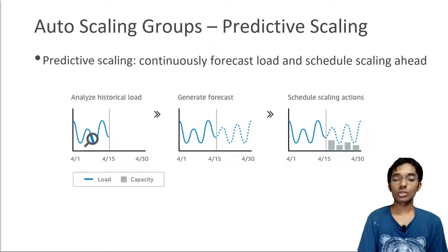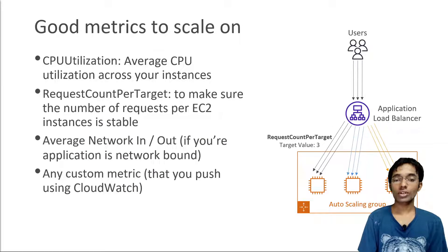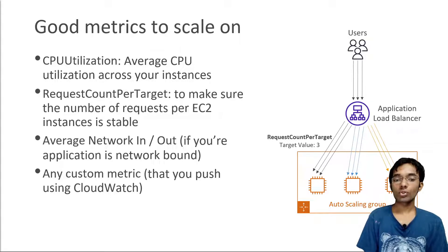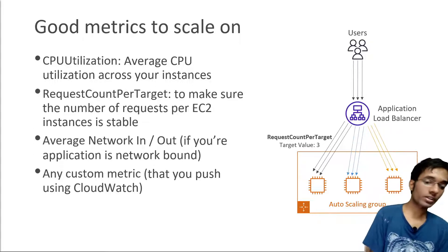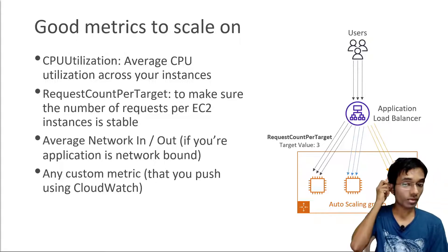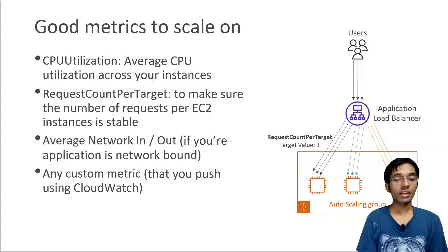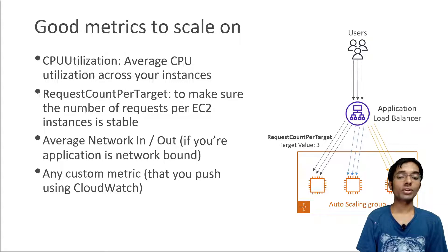Some good metrics to scale on for ASG: CPU utilization, request count per target, and average network in or out. Request count per target ensures that the number of requests per EC2 instance is stable and they are not overloaded in terms of network requests. For example, you say you want a maximum of three requests per target - meaning the Auto Scaling Group will try to ensure that at any point in time each EC2 instance is handling three requests. In real life this would be more like a thousand requests.